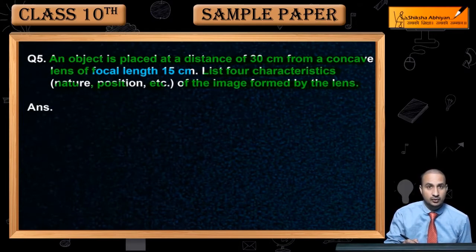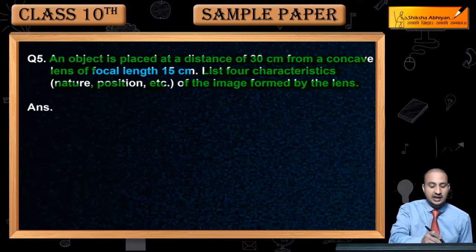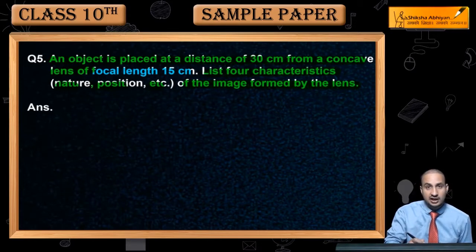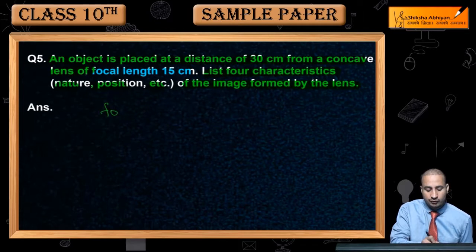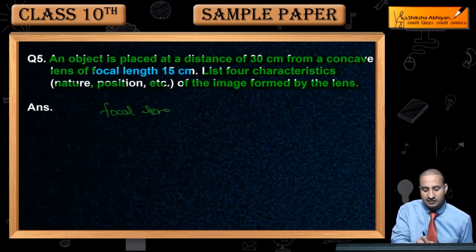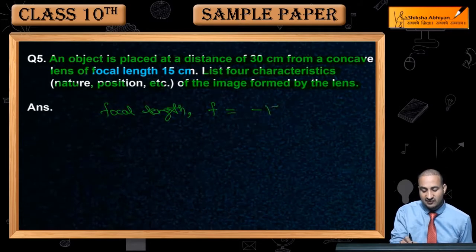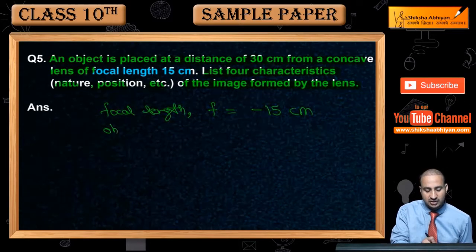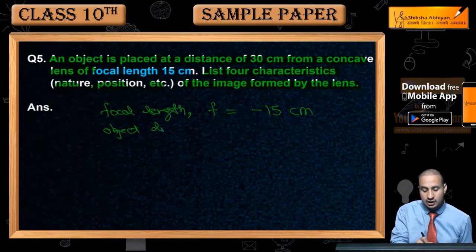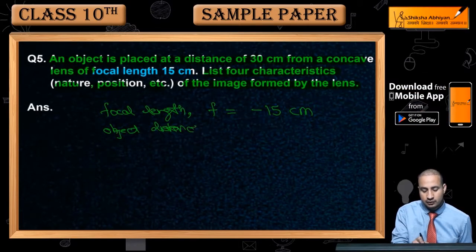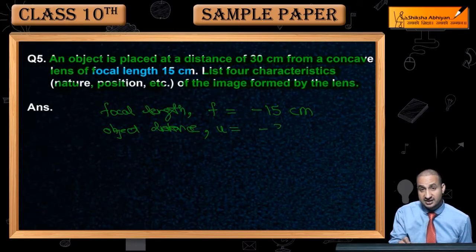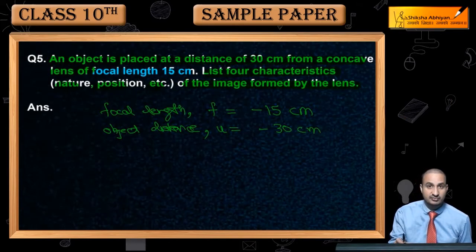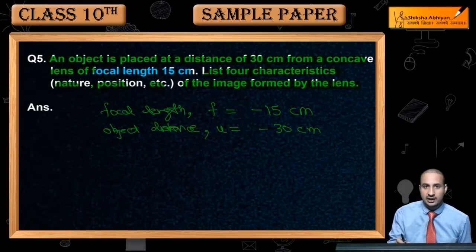We will use the lens formula first. The focal length, if you are using f, which will be minus 15 centimeter. And the object distance u will be minus 30 centimeter. Object distance is negative.